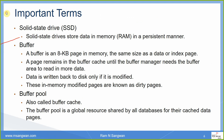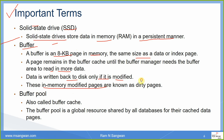To practice this, you need a solid state drive (SSD) or NVMe-based disk. Solid state drives store data in memory in a persistent manner. A buffer is an 8 KB page in memory — the same size as a data or index page. The page remains in the buffer cache until the buffer manager needs the area to read more data. Data is written back to disk only if modified; these in-memory modified pages are known as dirty pages. The buffer pool is also called buffer cache — they are the same thing, a global resource shared by all databases for their cached data pages.